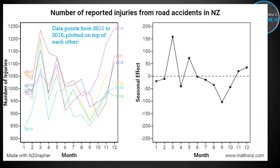On the left hand side we have all of those data points plotted on top of each other, so each year is plotted separately on that same graph on the same scale. The different colored lines are the different years, and you can see that these roughly follow a similar pattern. It's not exactly the same, but you can see some patterns, and so we can tell that our graph does have some seasonality — that there is some sort of seasonal trend we want to comment on.